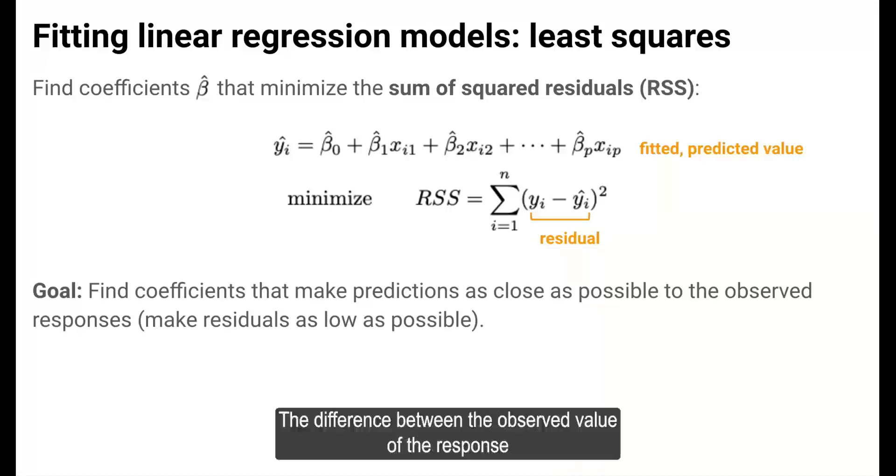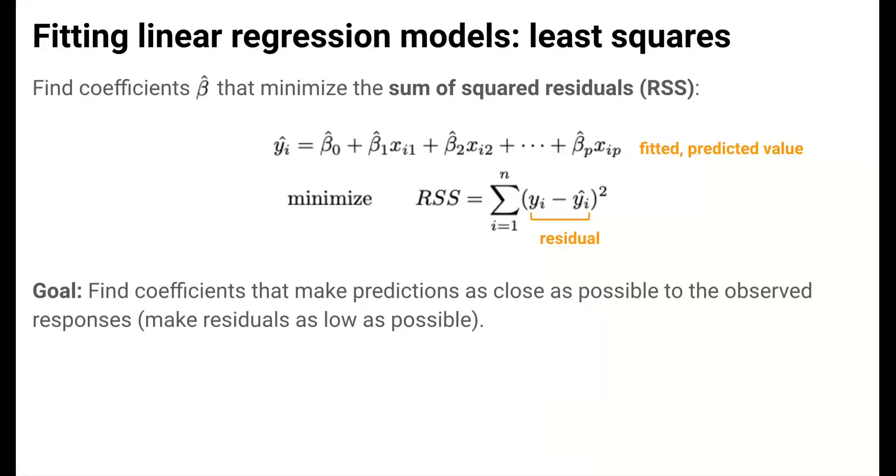A residual is the difference between the observed value of the response variable and the value predicted by the model. In minimizing the sum of squared residuals, the goal is to find coefficients that make your predictions as close as possible to the observed responses.